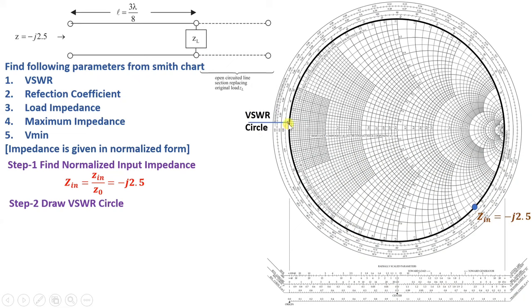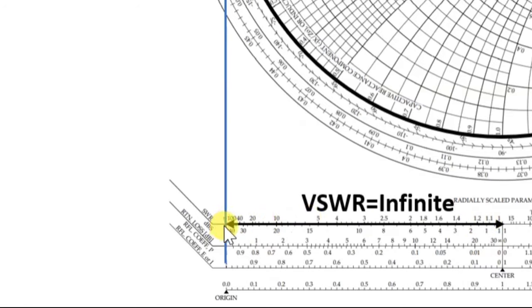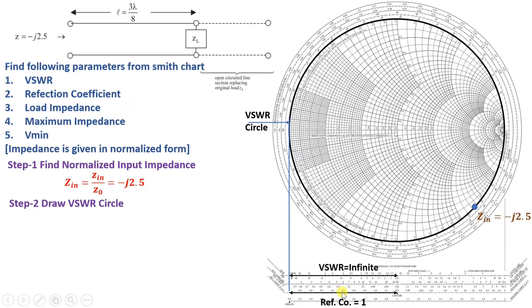From the VSWR circle, we stretch a straight line through the data axis. This line intersects the first axis, identifying the VSWR value, which is infinite for this outermost VSWR circle. On the third axis, we read the reflection coefficient, which is 1 in this case. So we have two answers: VSWR is infinite and reflection coefficient is 1.